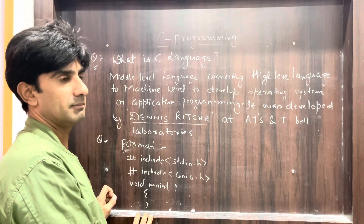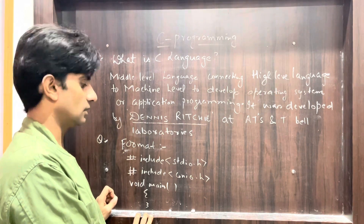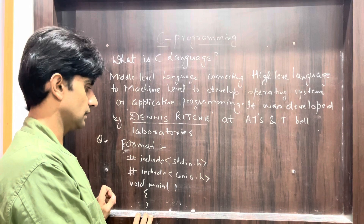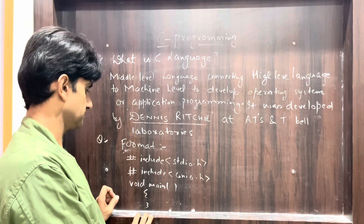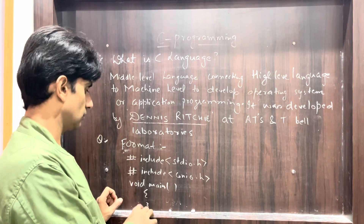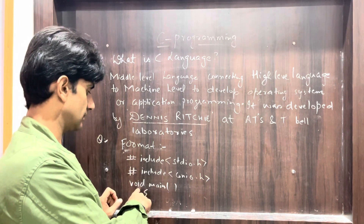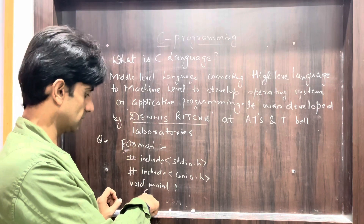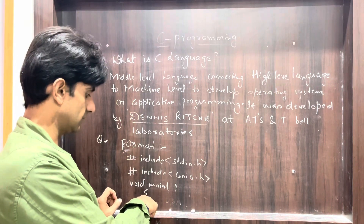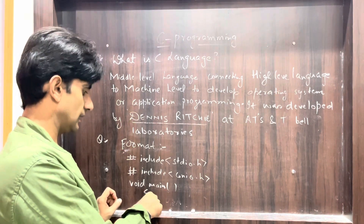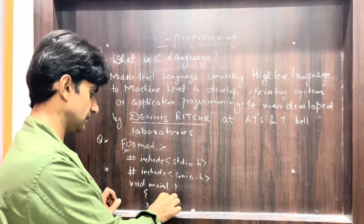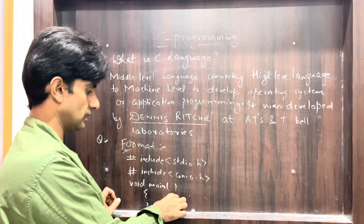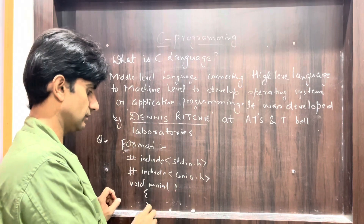We are going to use Turbo C++. There are others also, like Dev C++ and Code Blocks — you can also use those. Now the next step is void main, and then we put curly brackets. Inside these brackets we will write our program, which is the main execution block.